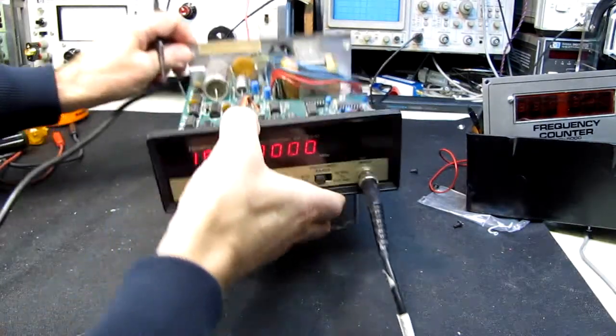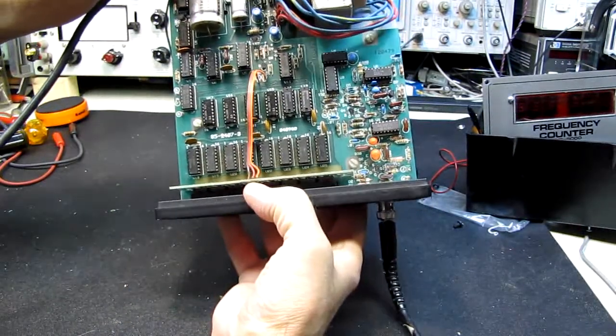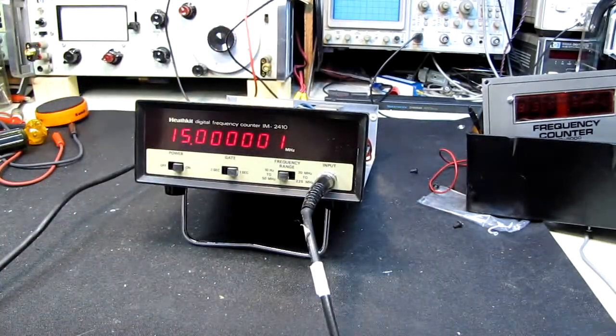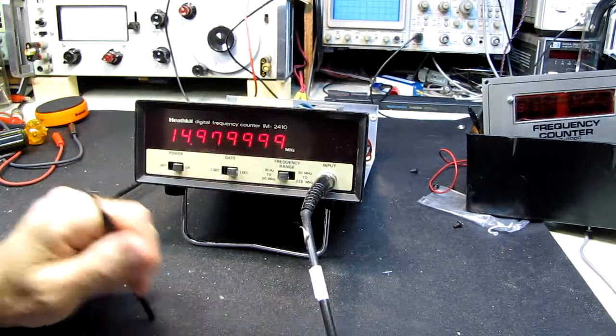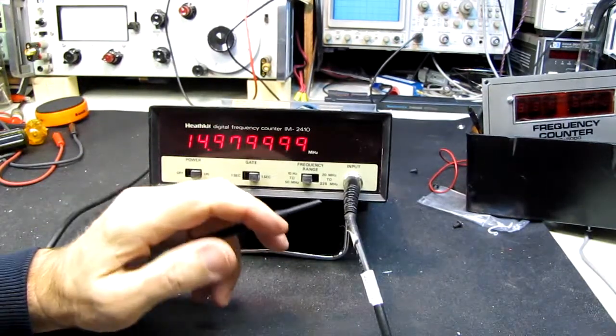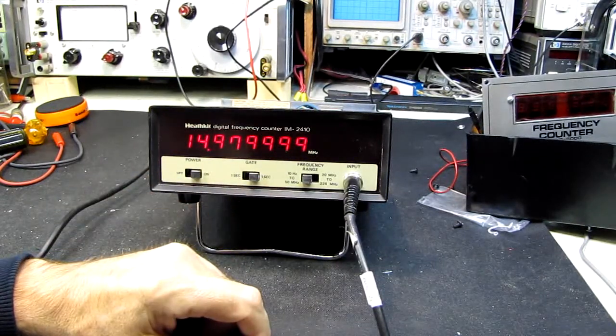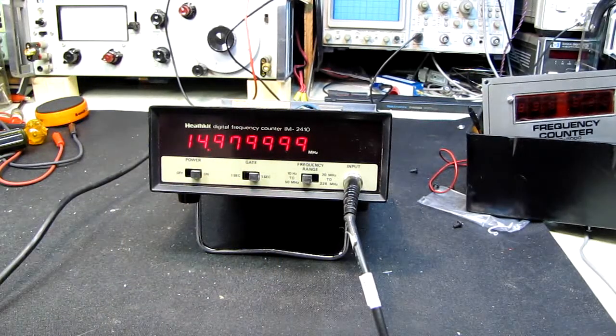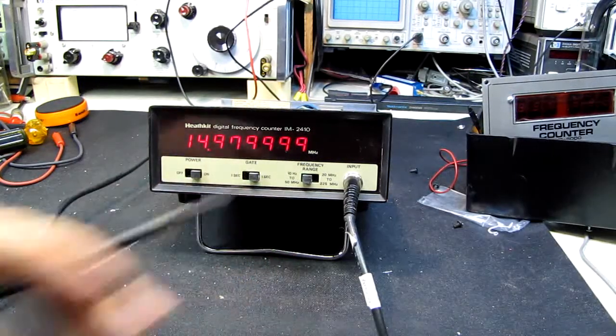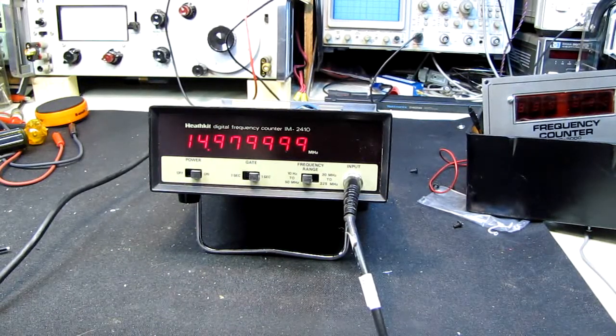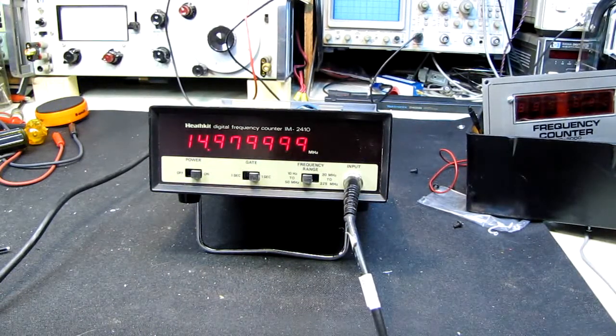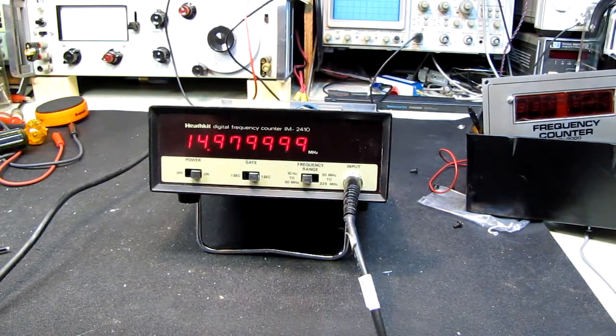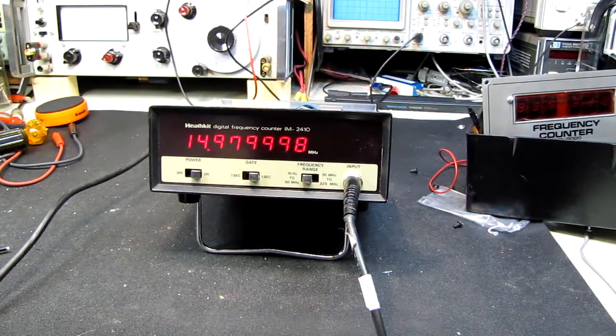Either way, all the ICs are socketed, including the display chips. And I could always put that down at the least significant digit. Who cares if the least significant digit is missing its center. It's pretty much meaningless on these counters anyway. They drift up and down. There's no crystal oven. They change with temperature. As the unit warms up, the frequency is going to drift. That first digit is going to be pretty much random on these counters.